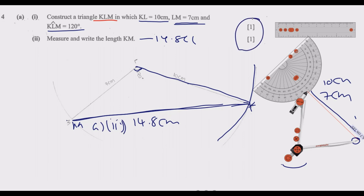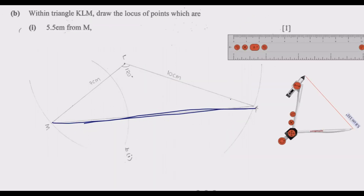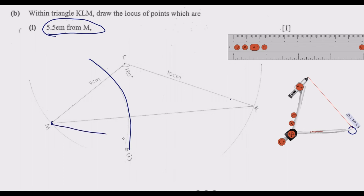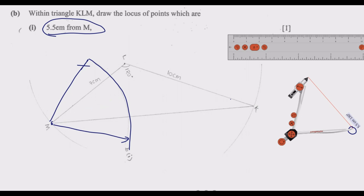Now proceed to question B, number 1. Within triangle KLM, draw the locus of points that are 5.5 cm from M. Extend the compass so the measurement is 5.5 cm, place the pin at M, and make an arc inside the triangle. Any point on that arc is exactly 5.5 cm from M. Once done, you earn that one mark.